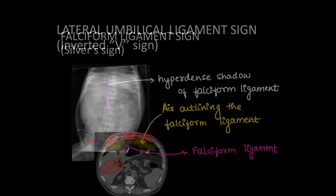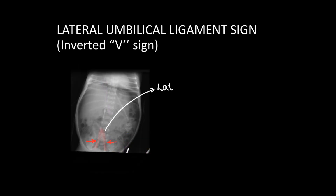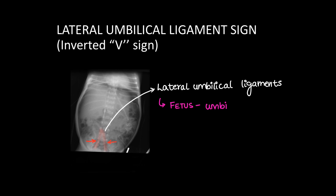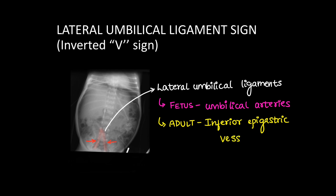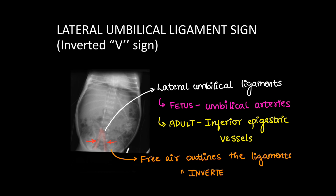Another ligamentous sign is the lateral umbilical ligament sign, also known as the inverted V sign. Here we can see two hyperdense shadows which are the lateral umbilical ligaments. In the fetus they contain the umbilical arteries, later regressing to form lateral umbilical ligaments in adults which carry the inferior epigastric vessels. Free air lining these ligaments accentuates their visibility on AP x-ray abdomen erect.